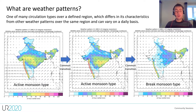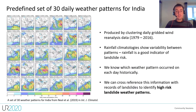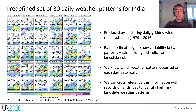Of course all these transitions can have implications for the likelihood of landslides occurring. The weather patterns used in this research are the set of 30 patterns shown here, which were produced through cluster analysis of historical wind data. The rainfall climatologies are plotted here and there is good variability between patterns, which is reassuring, as rainfall is a good indicator of landslide risk.